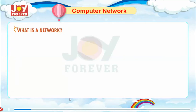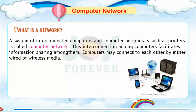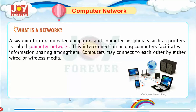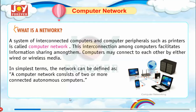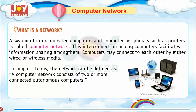What is a network? A system of interconnected computers and computer peripherals such as printers is called a computer network. This interconnection among computers facilitates information sharing amongst them. Computers may connect to each other by either wired or wireless media. In simplest terms, a computer network consists of two or more connected autonomous computers.